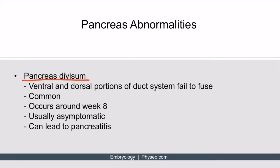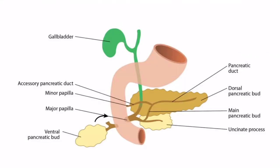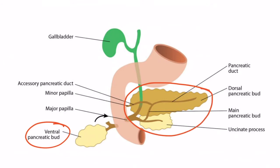Next is pancreas divisum. This occurs when the ventral and dorsal portions of the duct system fail to fuse. This is a common occurrence and happens around week eight of development. It is usually asymptomatic, but it can lead to pancreatitis. In this condition, the ventral bud does rotate and you end up with both the dorsal and ventral buds together, but they don't fuse — this doesn't usually result in vomiting, but it can lead to pancreatitis.